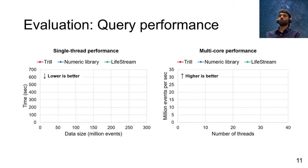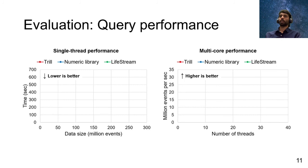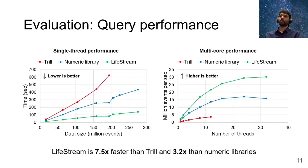We evaluate the performance of LiveStream against two strong baselines. Trill is a state-of-the-art stream processing engine specifically optimized for single machine performance. We also compare LiveStream against hand-tuned implementations available in numeric libraries like SciPy, NumPy, and Scikit-Learn. We measure both single-thread and multi-core performance of LiveStream, and find that LiveStream can perform 7.5 times faster compared to Trill, and 3.2 times faster compared to numeric libraries.